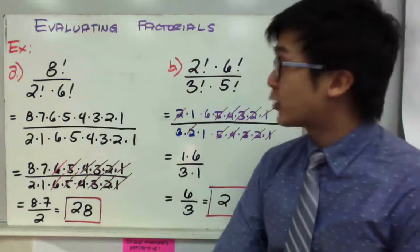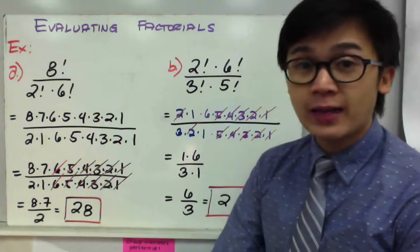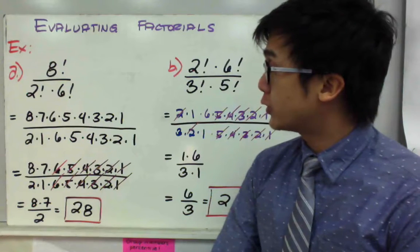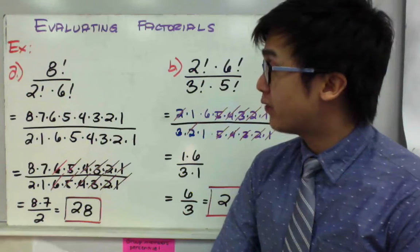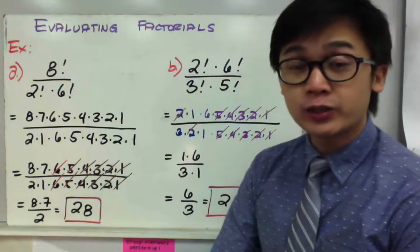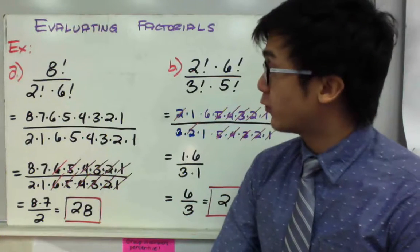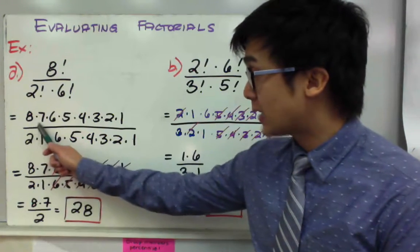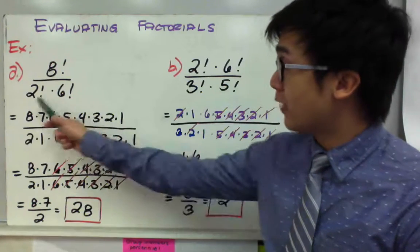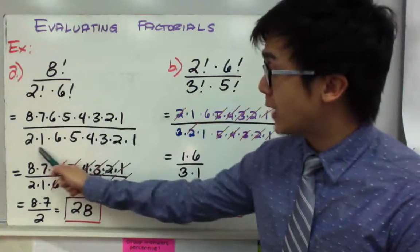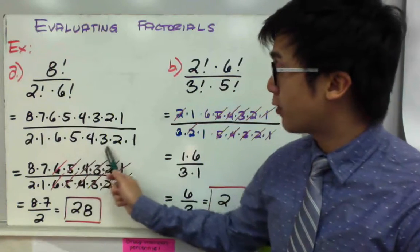Now let's use factorial notation and evaluate the following expressions. For letter A, I have 8 factorial all over 2 factorial times 6 factorial. To evaluate or simplify the expression, you just need to expand each term by its factorial notation. So for 8 factorial, you have 8 times 7 times 6 times 5 times 4 times 3 times 2 times 1. For 2 factorial, you have 2 times 1. And for 6 factorial: 6 times 5 times 4 times 3 times 2 times 1.